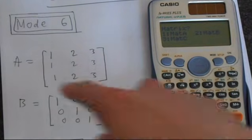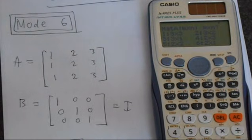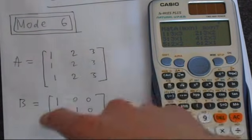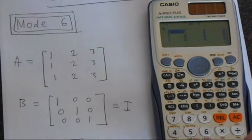So we need to insert our two matrices. This is matrix A. So we'll select matrix A, press 1. This is a 3 by 3, 3 rows and 3 columns. So we'll select 1 again and just enter this.